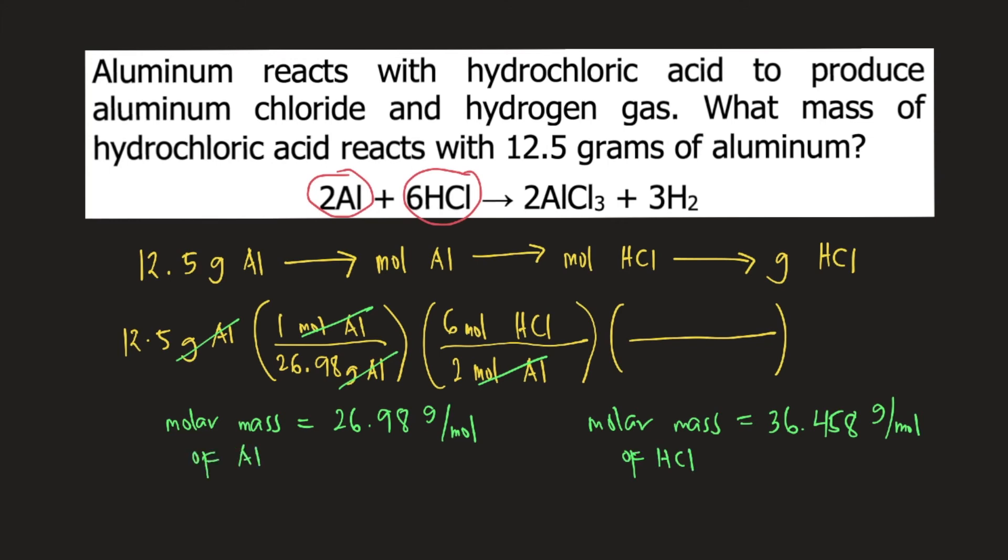We plug that into our equation: 1 mole of HCl weighs 36.458 grams of HCl. Moles of HCl will cancel, and our final unit is grams HCl.